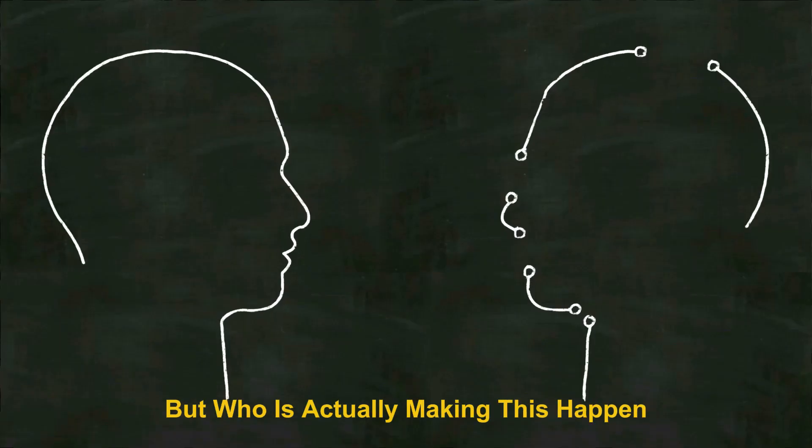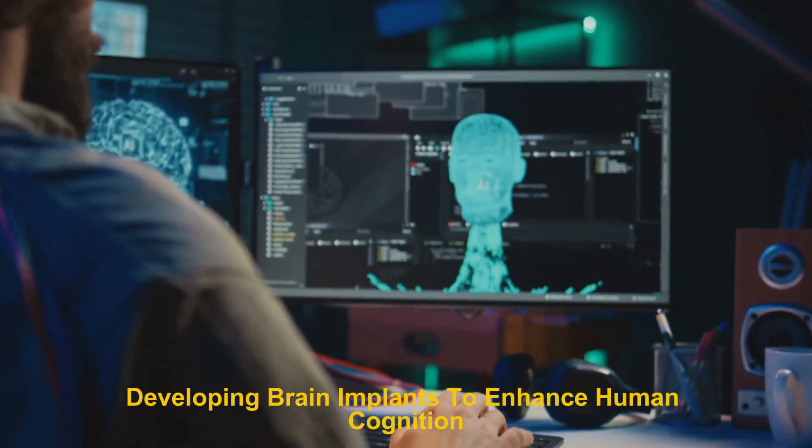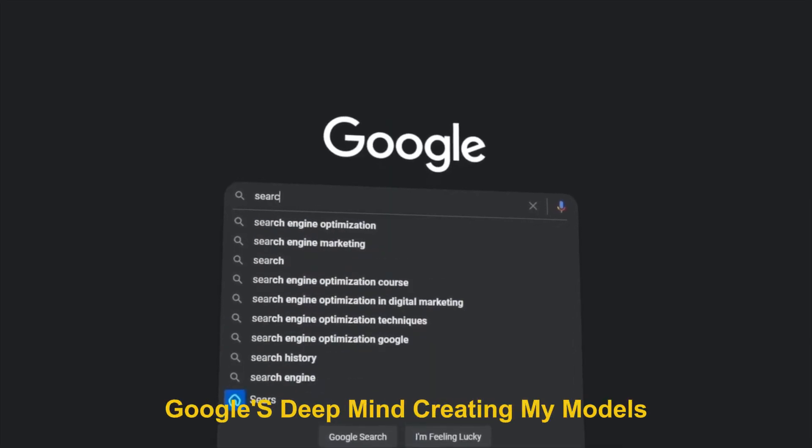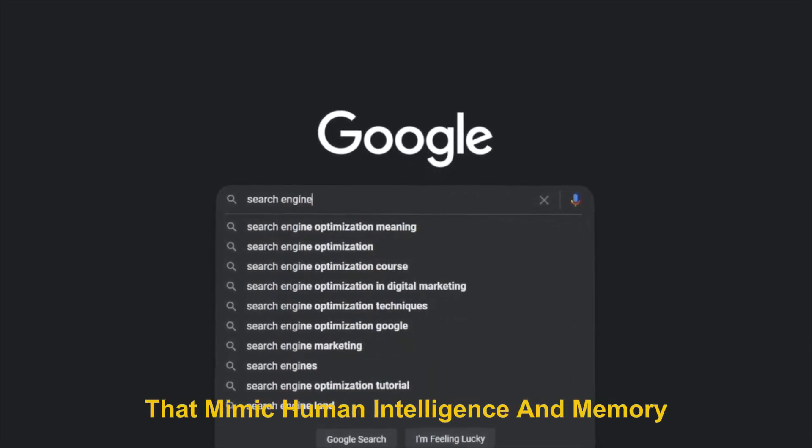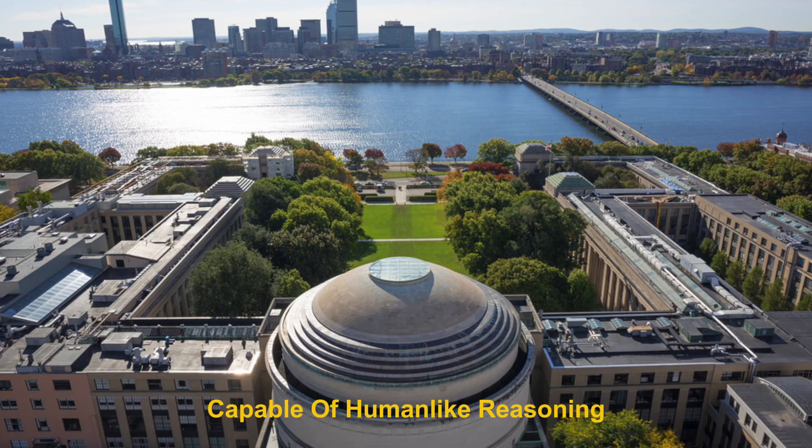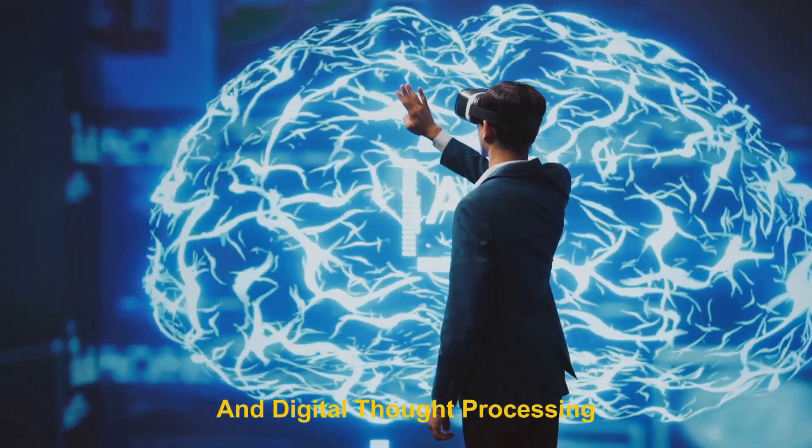But who is actually making this happen? Elon Musk's Neuralink is developing brain implants to enhance human cognition and potentially digitize consciousness. Google's DeepMind is creating AI models that mimic human intelligence and memory. OpenAI is advancing neural networks capable of human-like reasoning. MIT and DARPA are conducting research on brain storage and digital thought processing.